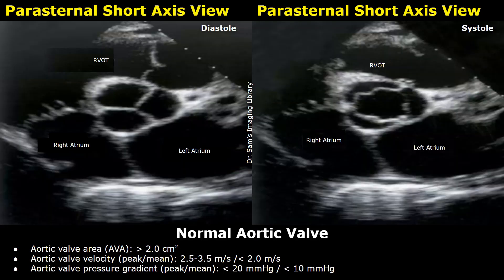These are parasternal short axis views showing the normal aortic valve during diastole and systole. The three cusps can be noted. This is how the valve appears during the cardiac cycle.